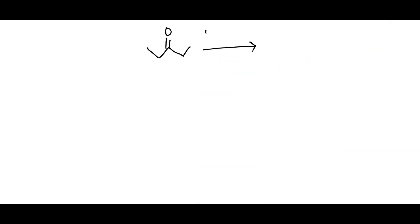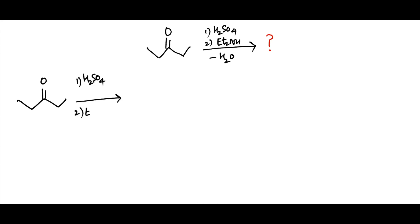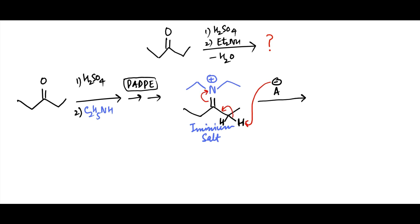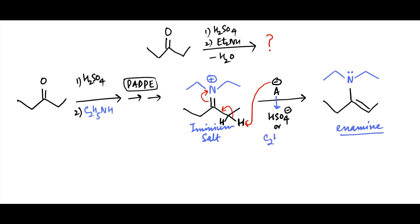Consider this practice problem: 3-pentanone on acid-catalyzed treatment with diethylamine. Through various steps of protonation, addition, deprotonation, protonation, and elimination, it will form iminium salt. The iminium salt has no hydrogen attached to nitrogen, therefore base will deprotonate alpha carbon to form an enamine. This deprotonation can occur on either of the two alpha carbons and will lead to formation of the same enamine. The deprotonating species can be the conjugate base of the acid used or the secondary amine.